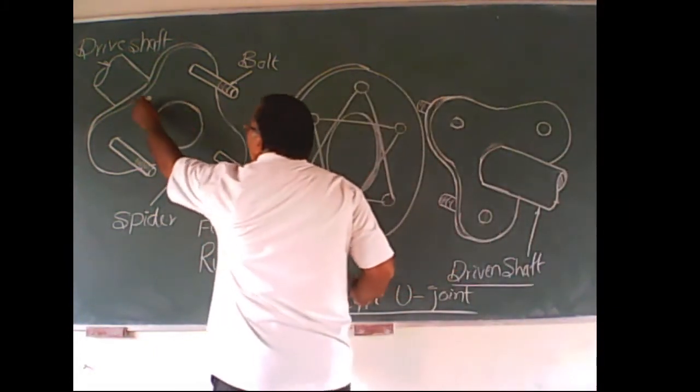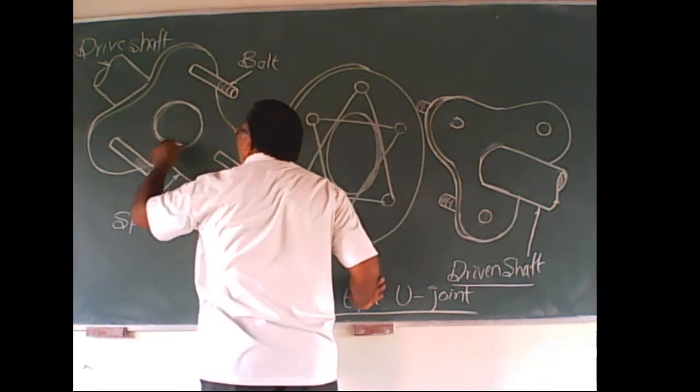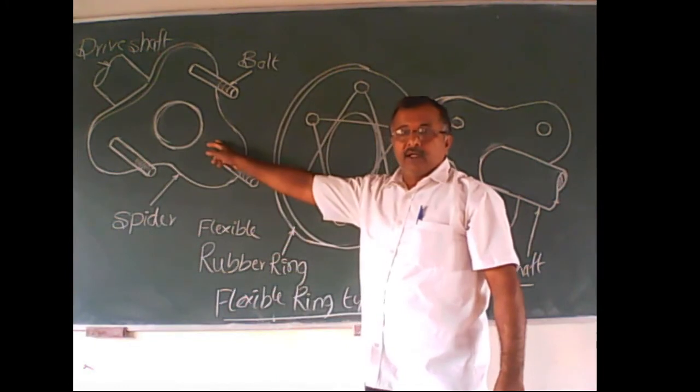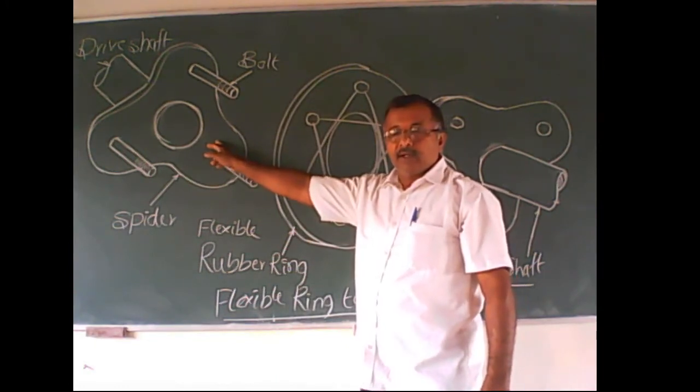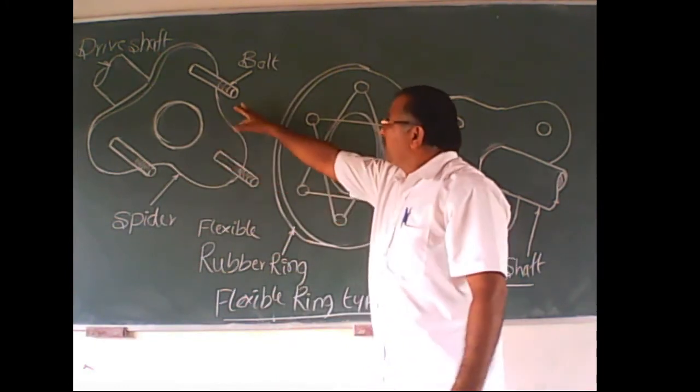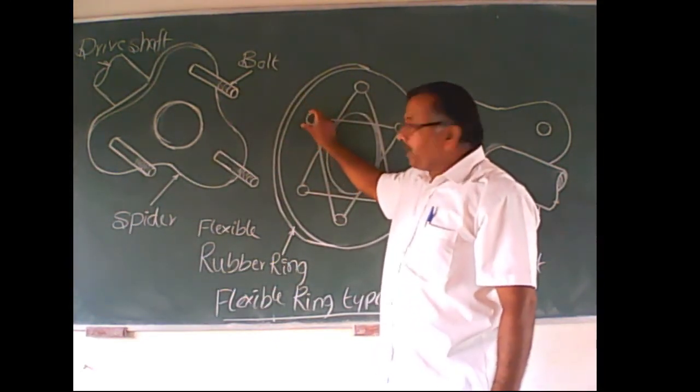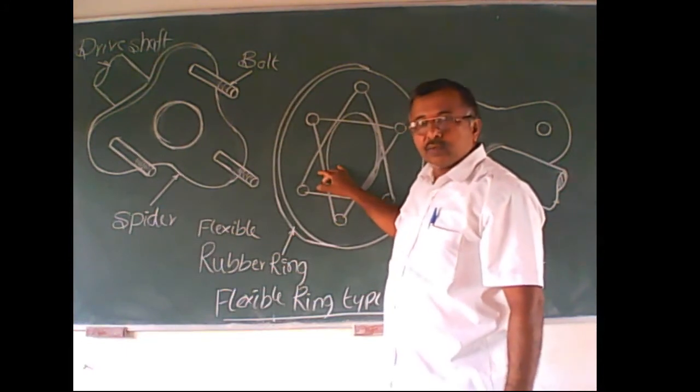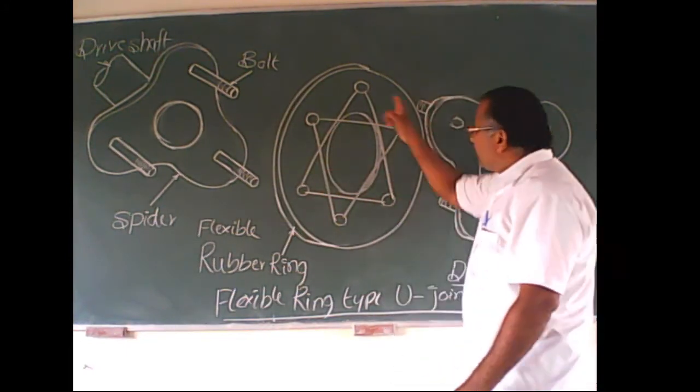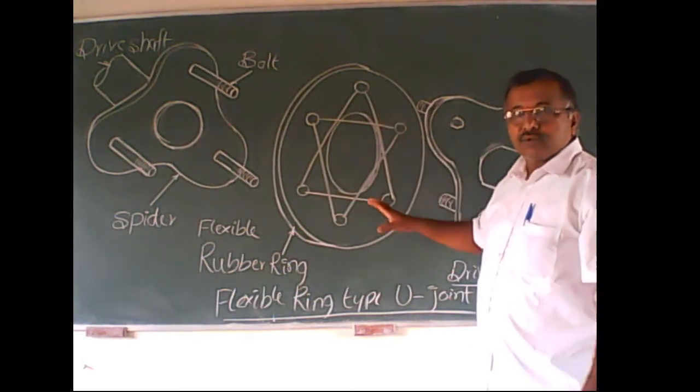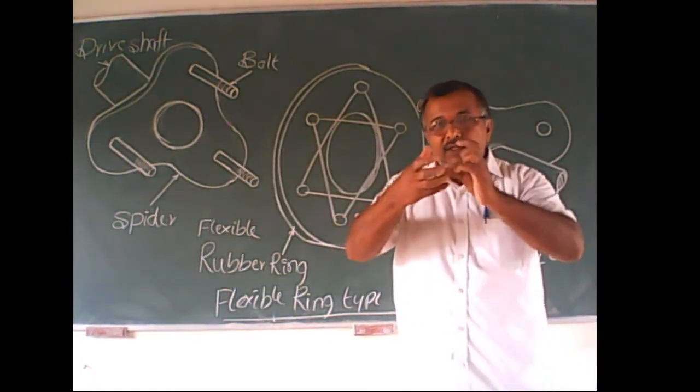Here, the shaft is splined or it is threaded to the spider. These three bolts are inserted and we are putting washer and nut to the rubber to avoid the shearing and other three bolts are used for inserting the bolts. Then it becomes one unit.